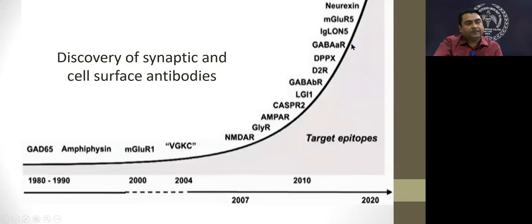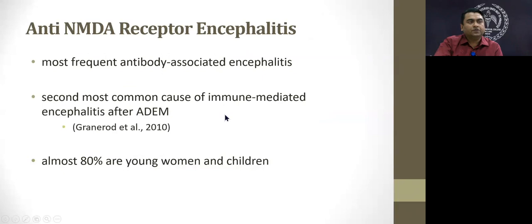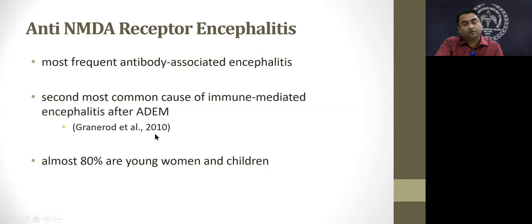The discovery of synaptic and cell-surface antibodies has significantly increased in number from 2007 onward, when the NMDA receptor was initially discovered, giving rise to many subsequent antibody discoveries. The NMDA receptor encephalitis is considered the most frequent antibody-associated encephalitis, or the second most common among immune-mediated encephalitides, and probably the third most common among all individual etiologies including viral causes.